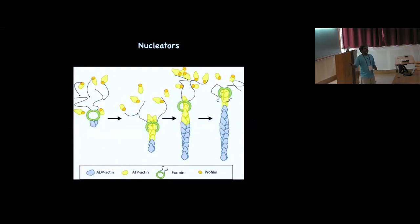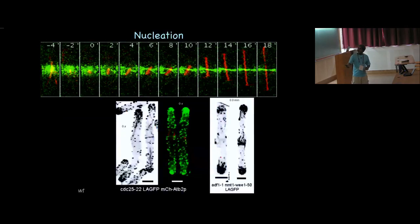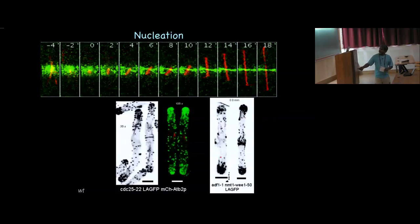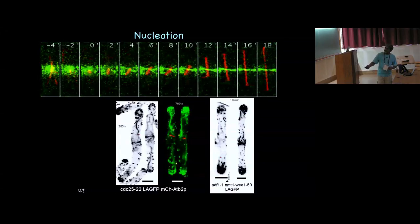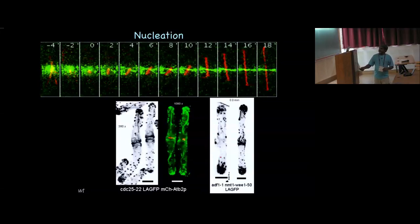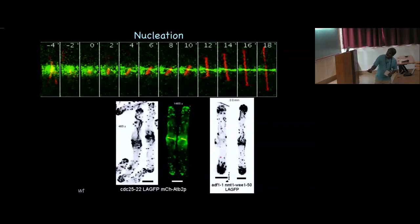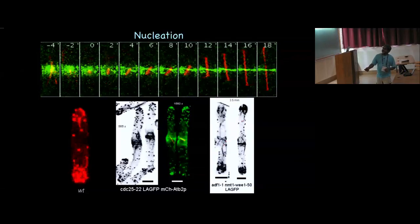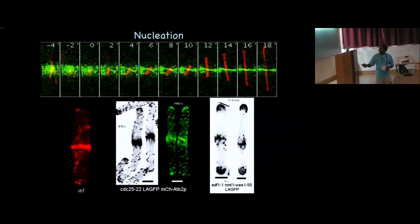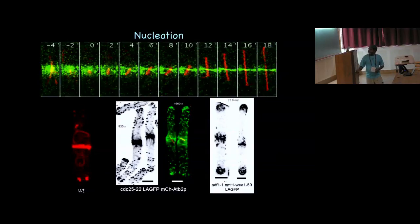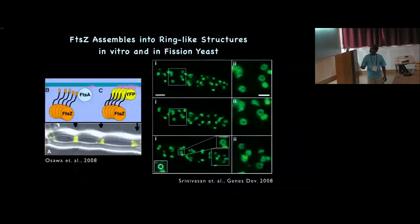In eukaryotes we know all about the actin nucleators — formins — that localize at the mid-cell site from nuclear cues. Nucleators come there, actin polymerizes from these nucleators, actin cables are dragged toward the ring, and the ring assembles completely. In bacteria there are no such nucleators for FtsZ, so FtsZ must be somewhat self-assembling. This was shown elegantly by Erickson's group. FtsZ needs a protein to anchor it to the membrane via a small 13-amino-acid residue.